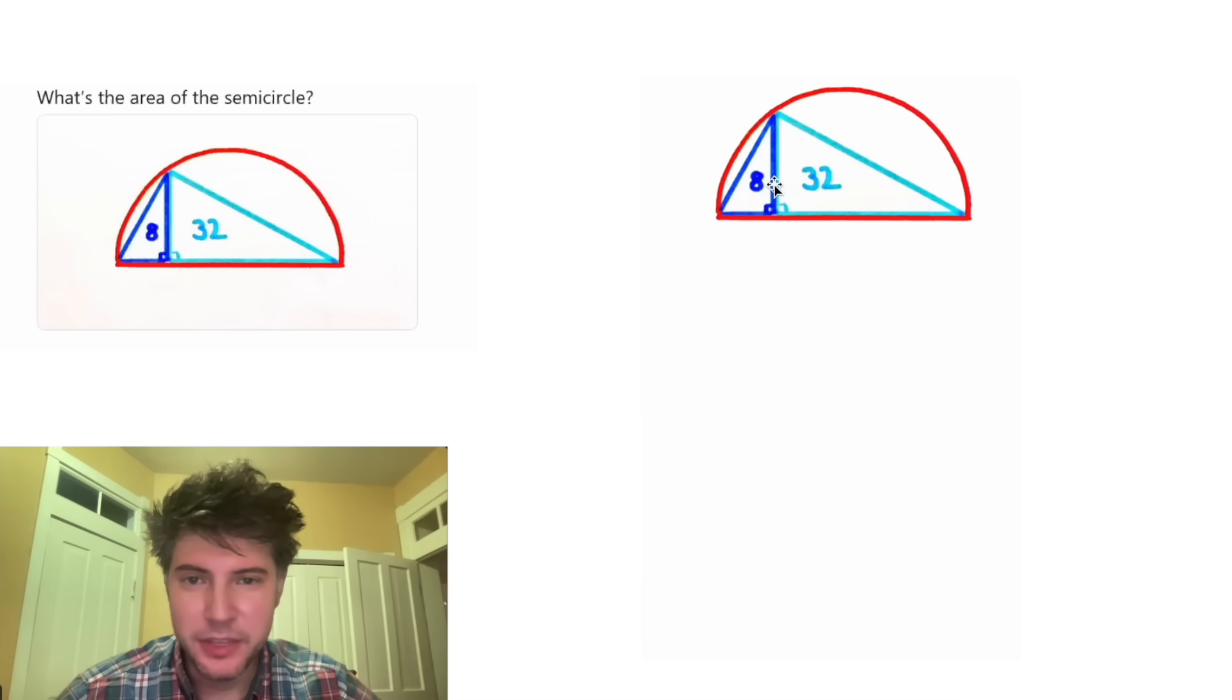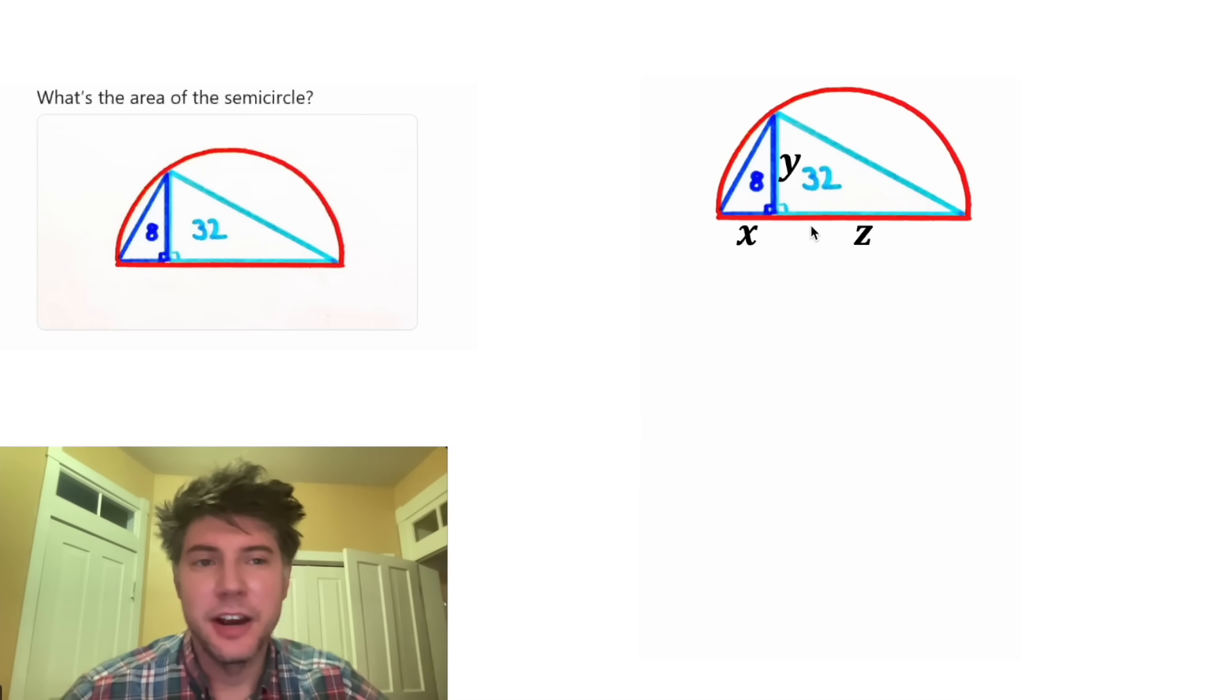First, I want to break up these distances and give them variables. Let's go X for this part, Y for this one, and Z for this one. They're asking us for the area of the semicircle. Let's write an equation for that. The area of a semicircle is pi radius squared divided by 2.